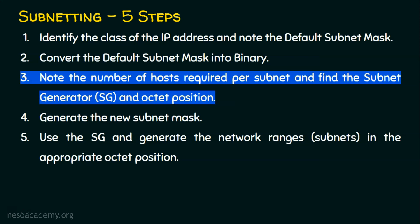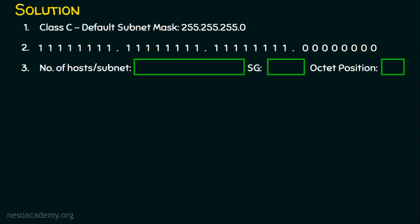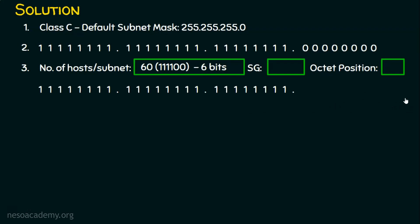Starting with the largest subnet — 60 users. When we convert 60 to binary, we get 111100. We cannot represent 60 in decimal without 6 bits in binary, so the minimum number of bits required is 6. We reserve 6 zeros from the right and fill the remaining positions with ones.